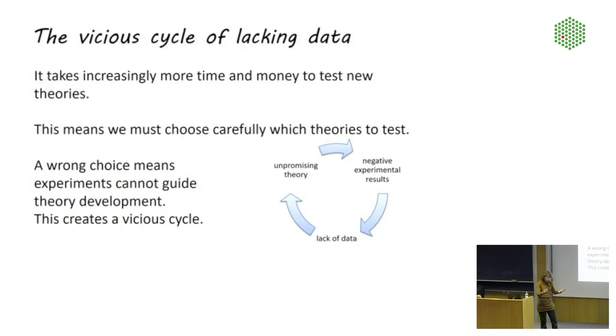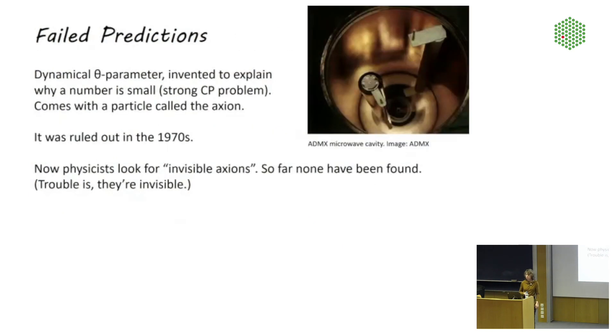And this creates a vicious cycle because you start with an unpromising theory. Then you commission an experiment to look for that. You only get negative results. You have a lack of data. So you have no guidance to develop your theory. You get stuck with the unpromising theory and the whole thing repeats. And the foundations of physics, we have been in that cycle for several decades. Here's some example of such failed predictions.